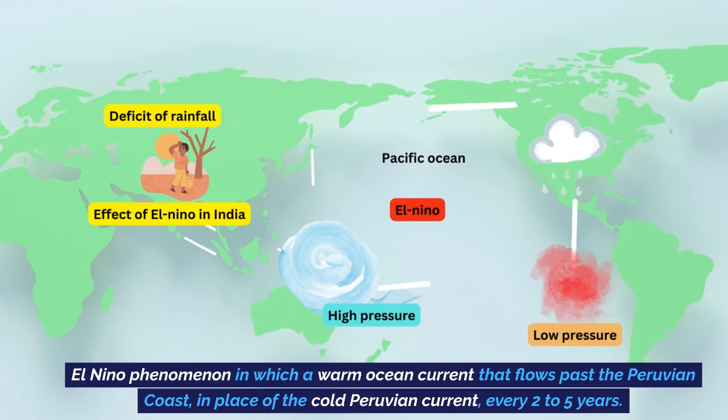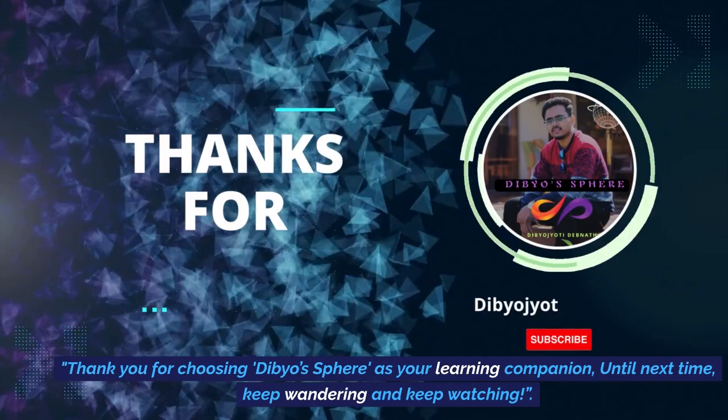The last factor is El Niño — a phenomenon in which a warm ocean current flows past the Peruvian coast in place of the cold Peruvian current, every two to five years. El Niño also affects Indian climate. In the year of El Niño, India receives very less rainfall.